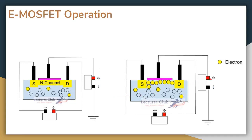When we apply a positive terminal at the gate, the free electrons present in the body of the MOSFET are attracted towards the gate. The more positive charge at the gate, the more electrons start accumulating between the source and the drain, forming a channel — a conductive path between the drain and the source. On the other hand, because there is an insulating layer between the gate and the body, the accumulated electrons will not move to the gate.